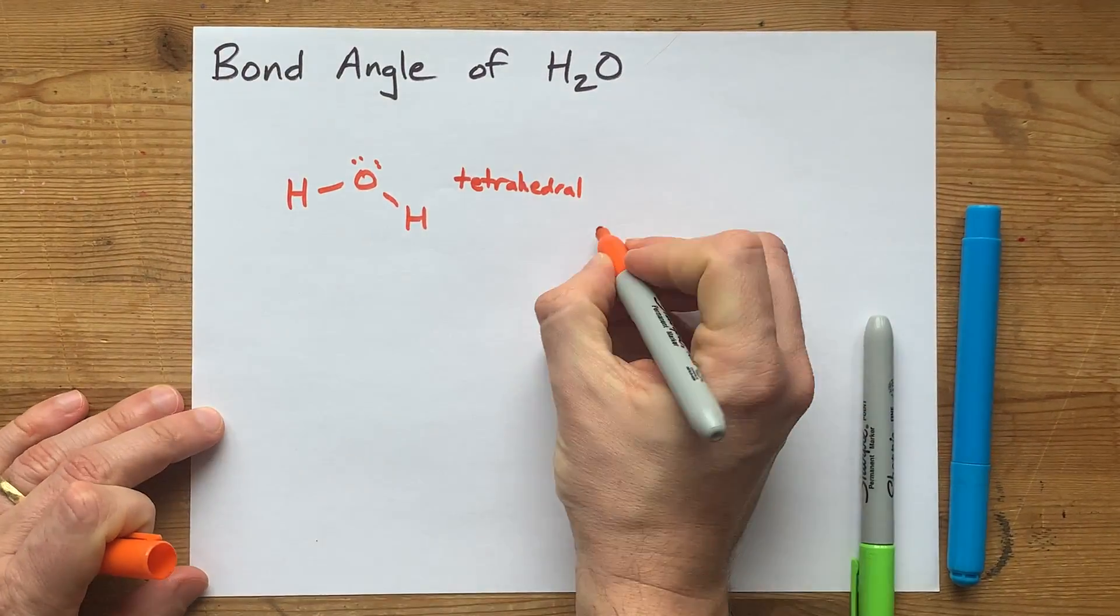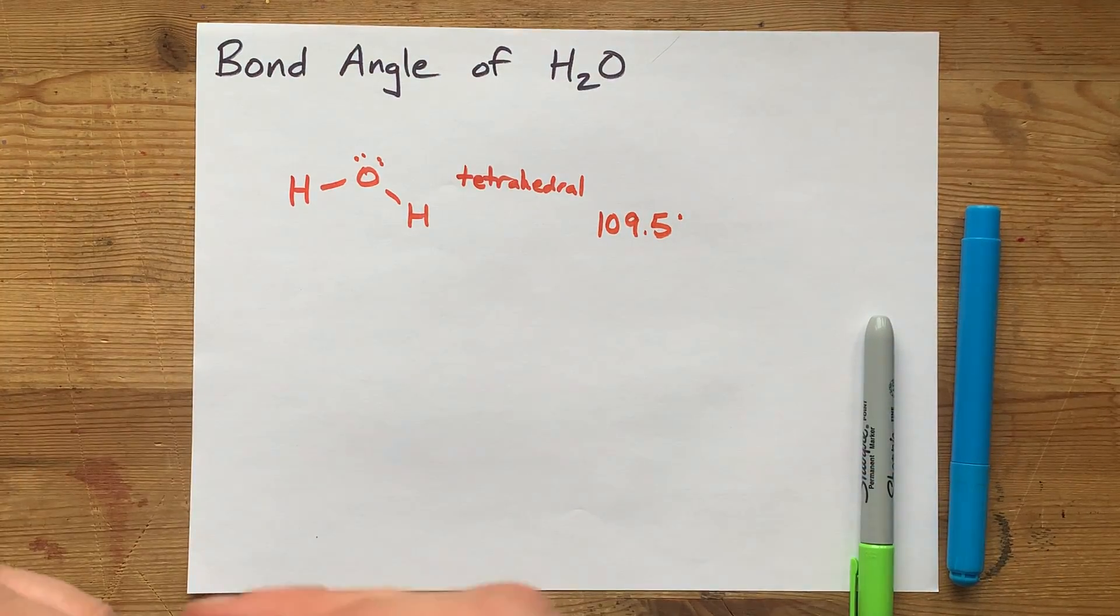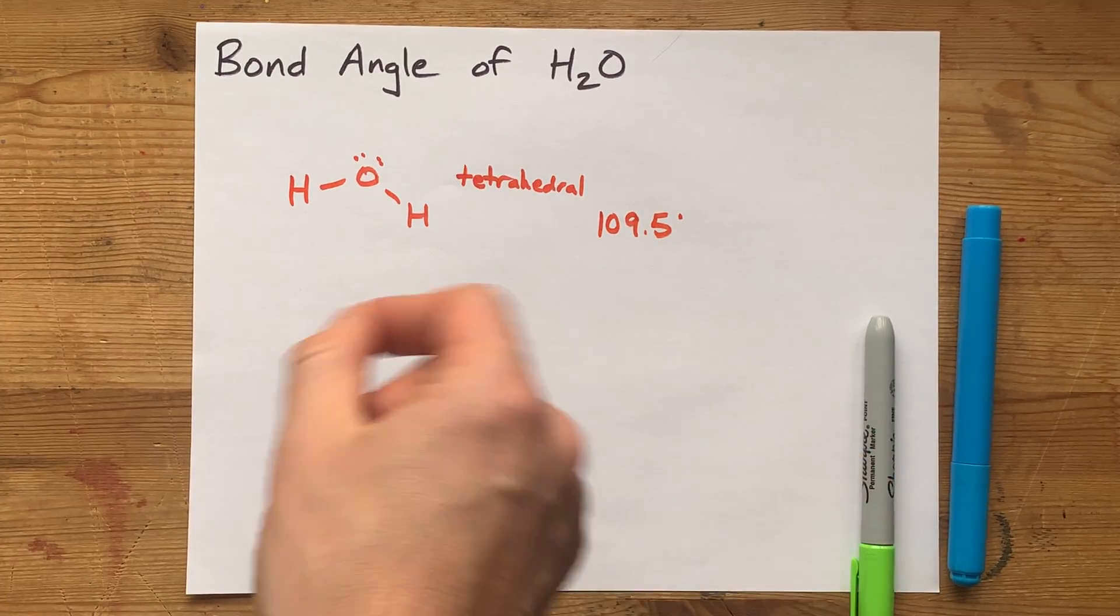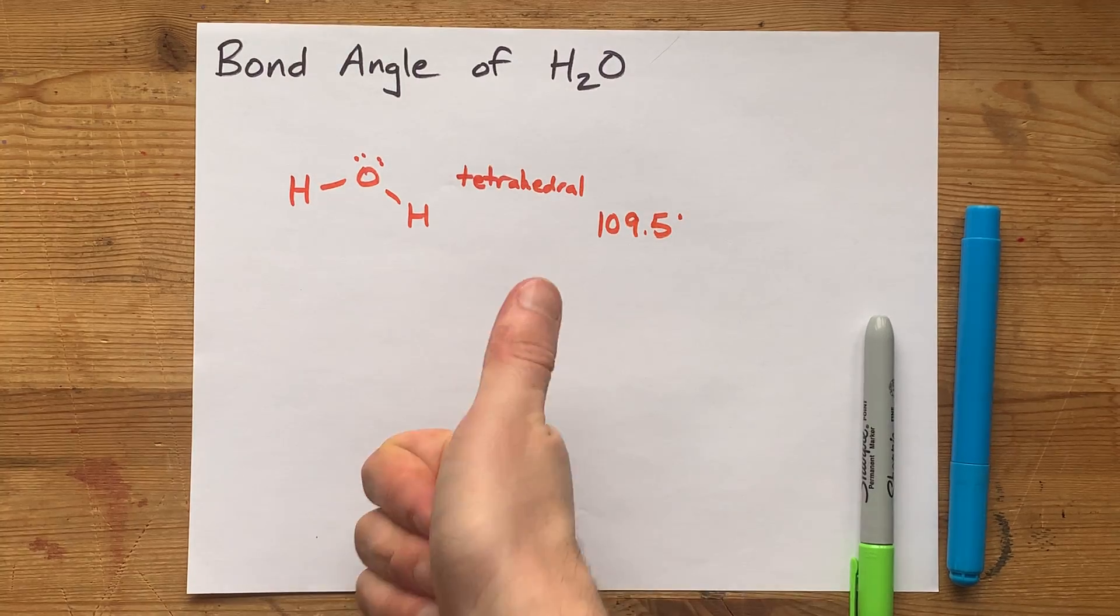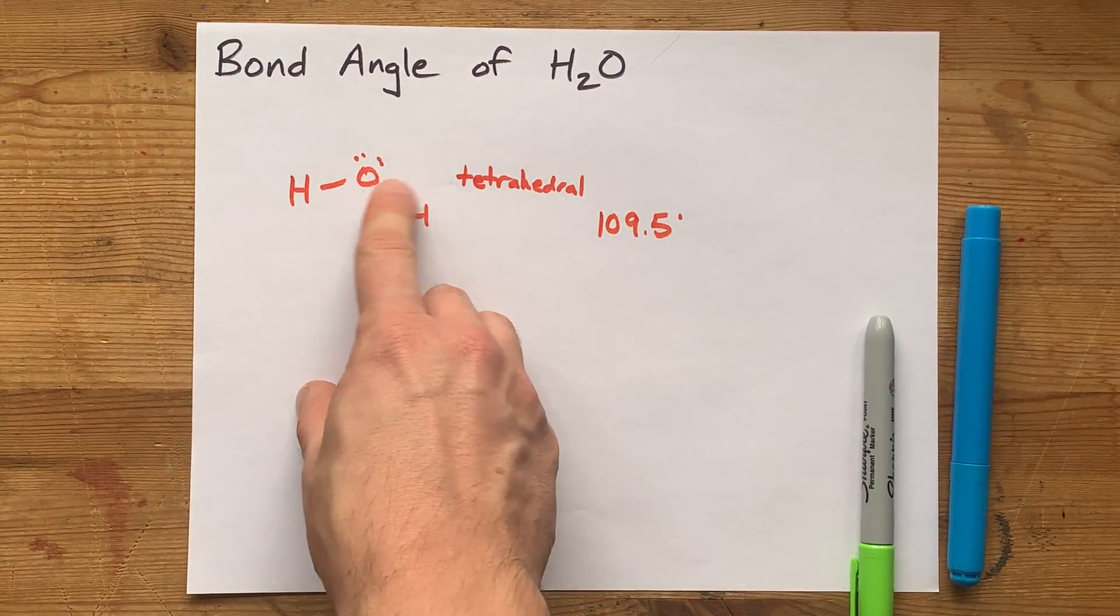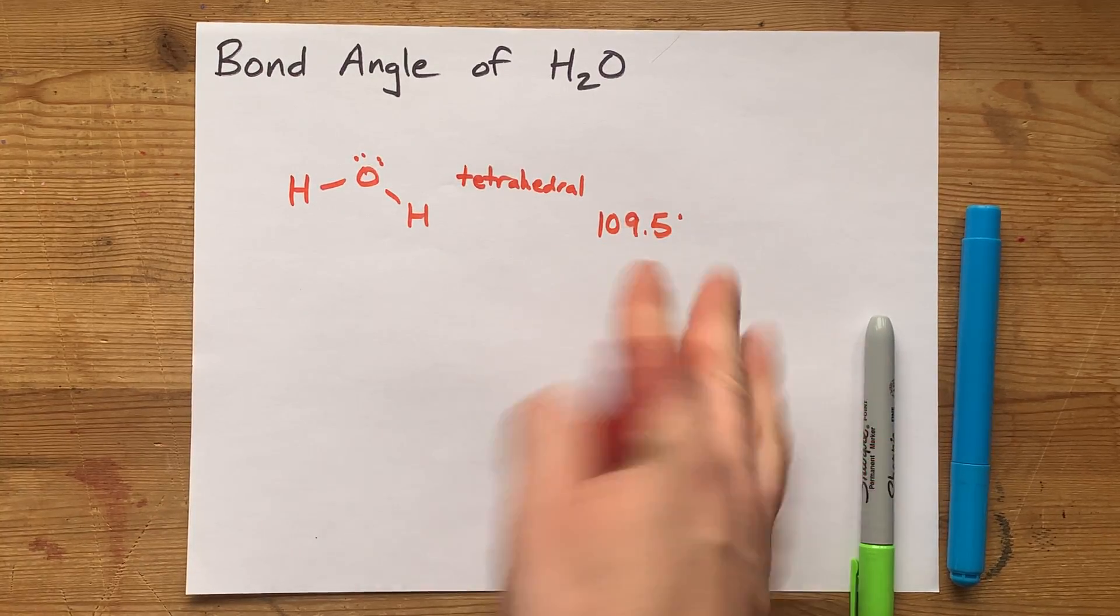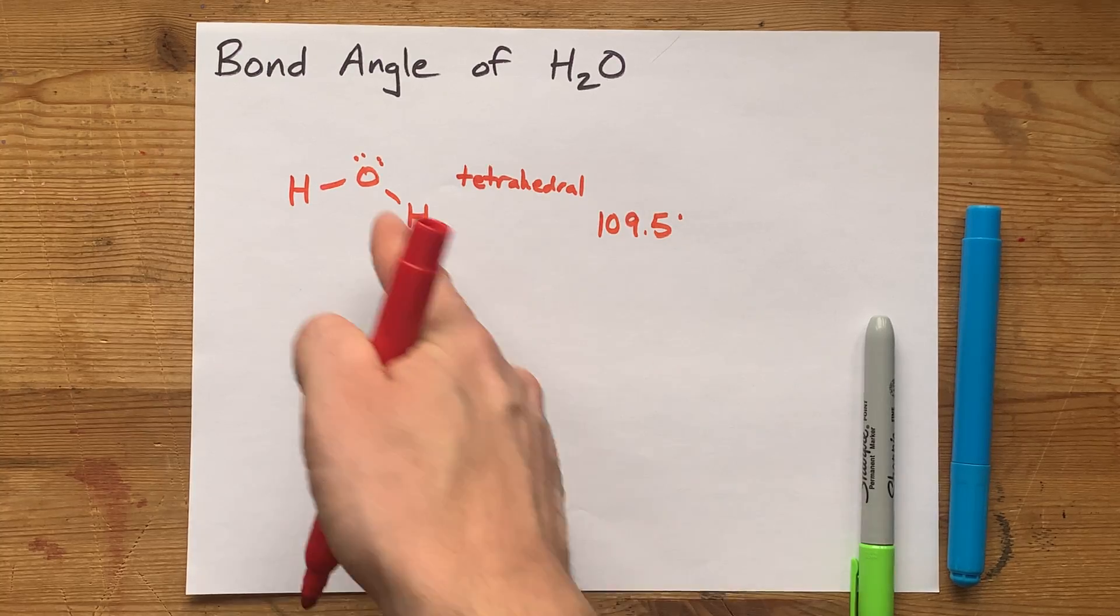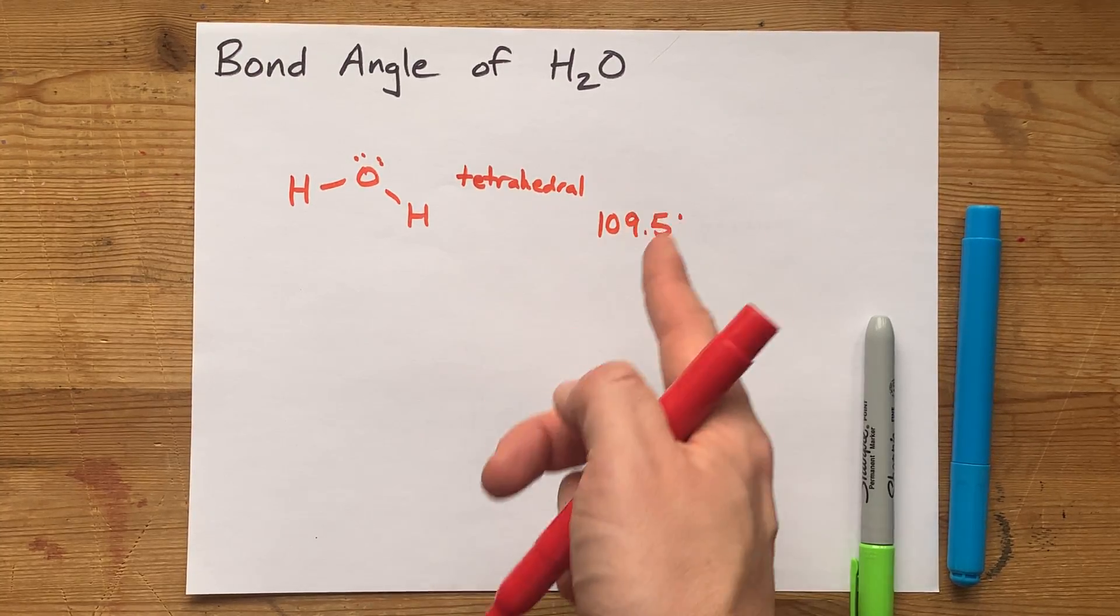Now, tetrahedral arrangements are generally 109.5 degrees, and what I tell my high school students is that in the second row of the periodic table, like carbon, nitrogen, oxygen, fluorine, when those are the central atoms and you add lone pairs, you should take away two to three degrees for each of the lone pairs from this number.